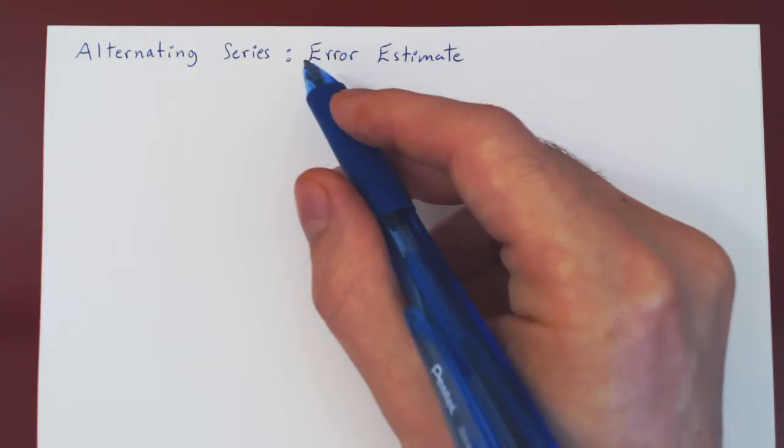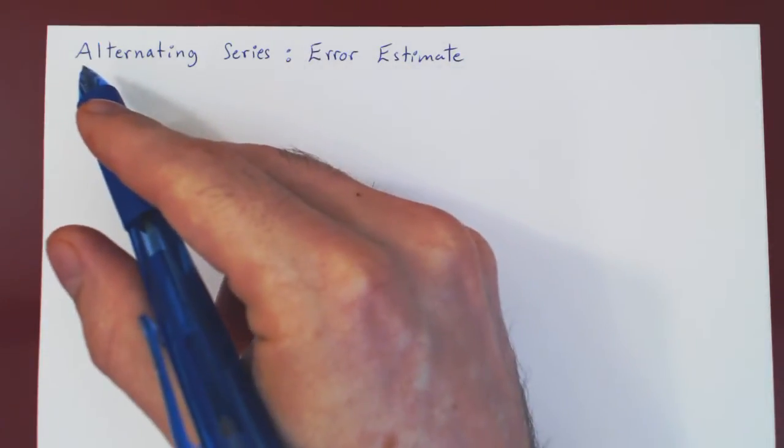Ok, so in this video we will look at the error estimate in the case of alternating series.